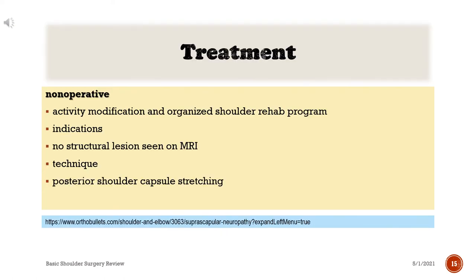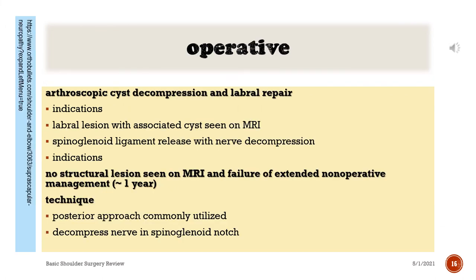Treatment — Non-operative: activity modification and organized shoulder rehabilitation program. Indications: no structural lesion seen on MRI. Technique: posterior shoulder capsule stretching. Operative treatment: arthroscopic cyst decompression and labral repair — indications: labral lesion with associated cyst seen on MRI. Spinoglenoid ligament release with nerve decompression — indications: no structural lesion on MRI and failure of extended non-operative management of approximately 1 year.